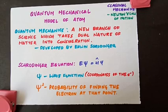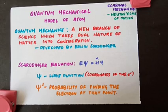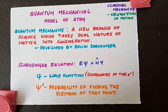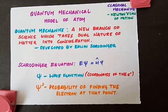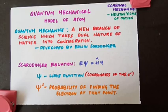From the value of ψ² at different points within an atom, it is possible to predict the region around the nucleus where the electron will most probably be found. When we use ψ to describe an electron in an atom, we say the electron occupies the orbital described by that wave function. Since many wave functions are possible for one electron, there are many atomic orbitals in an atom, and based on ψ and ψ² we define atomic orbitals and quantum numbers.